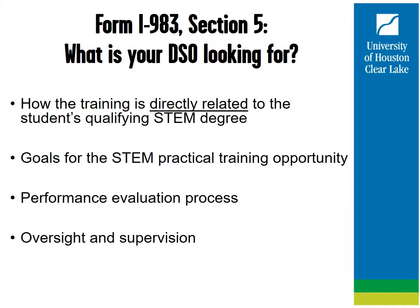This section should be individualized just for you and should include sufficient detail in each section. Your DSO is looking for detailed training information and how it is directly related to your major program of study. For example, if you have a degree in biology, your job or training should be related to that field and should be clearly explained on the Form I-983. Just because you took two classes in another area such as marketing does not mean that you can work in marketing. The goals should be clearly outlined and specific to your training skills and what you will achieve in a given period of time. Your employer must also describe how they evaluate your performance; if they already have a performance evaluation system, they can describe that. Please note you can attach additional pages if more room is necessary.